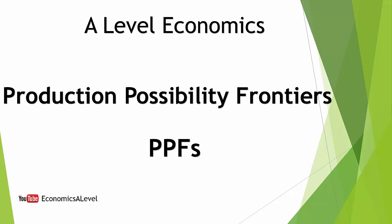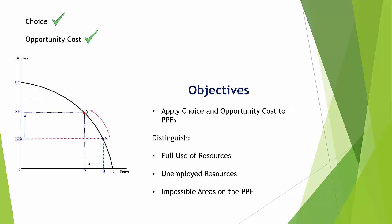Hello and welcome back to Economics A-Level on YouTube. Today we're going to look at PPFs, Production Possibility Frontiers. In the last video we looked at choice and opportunity cost — if you want to revisit that, click the link. The objective of this video is to build on those concepts and apply them graphically to production possibility frontiers, looking at full and unemployed use of factors of production on the PPF.